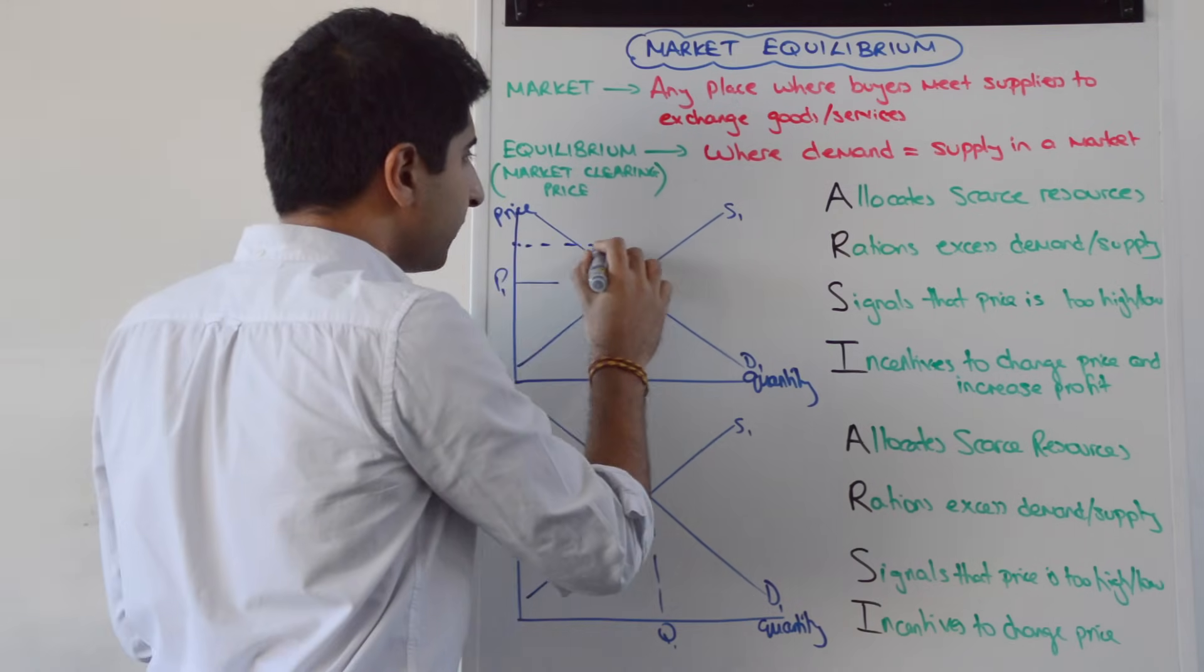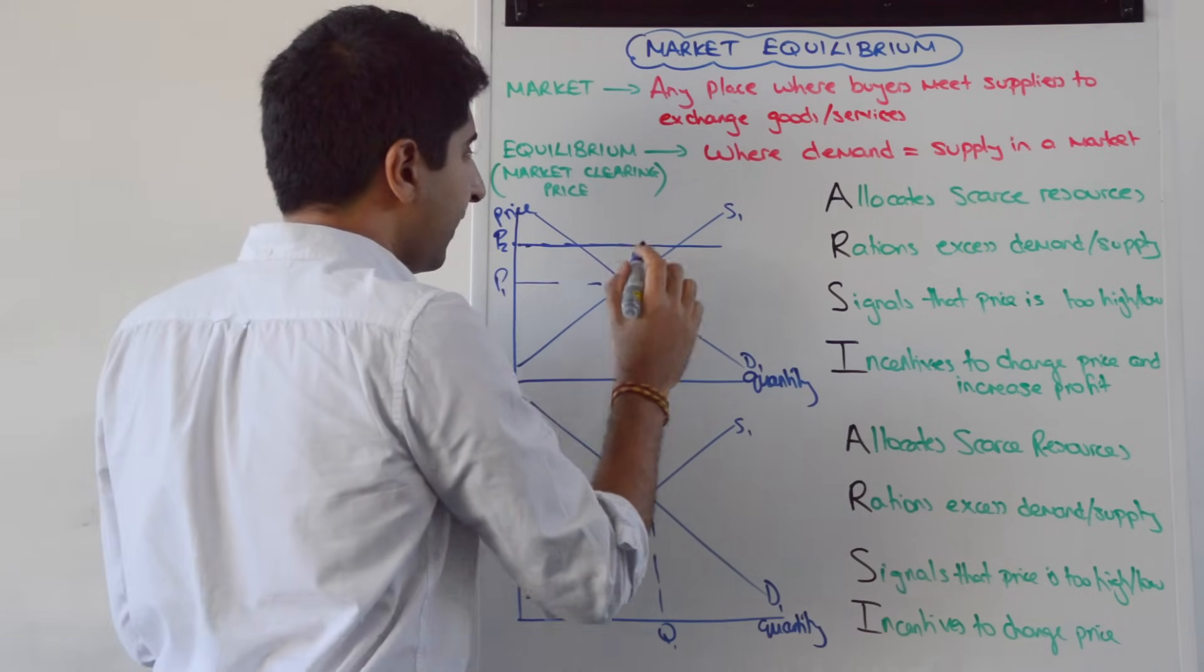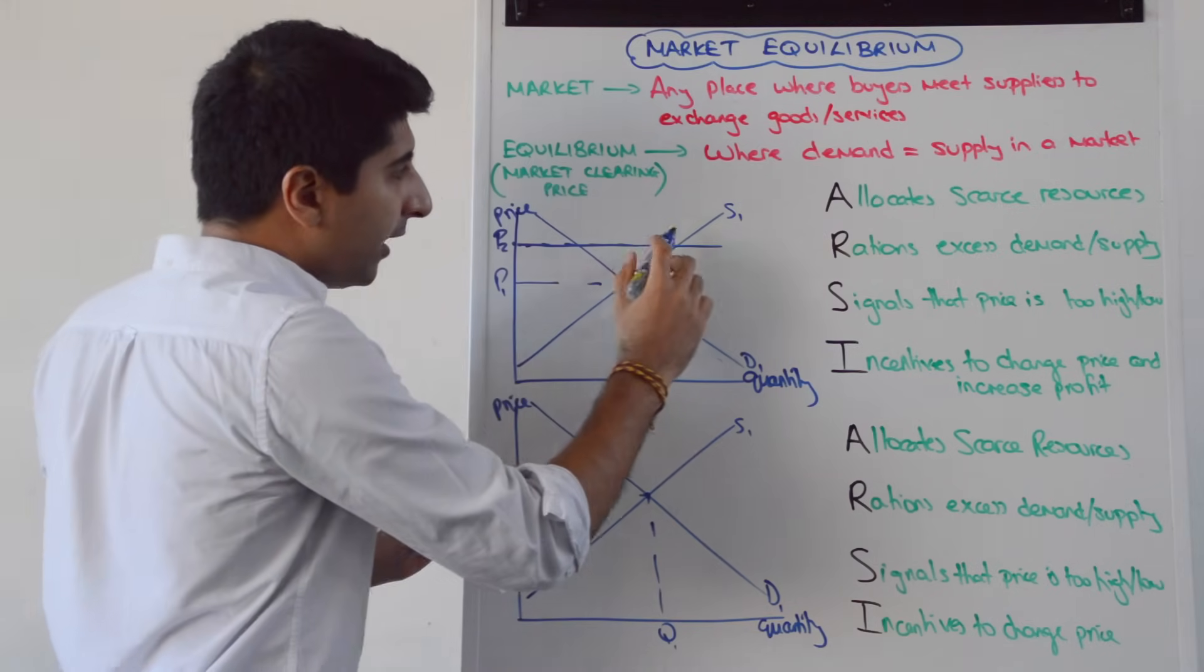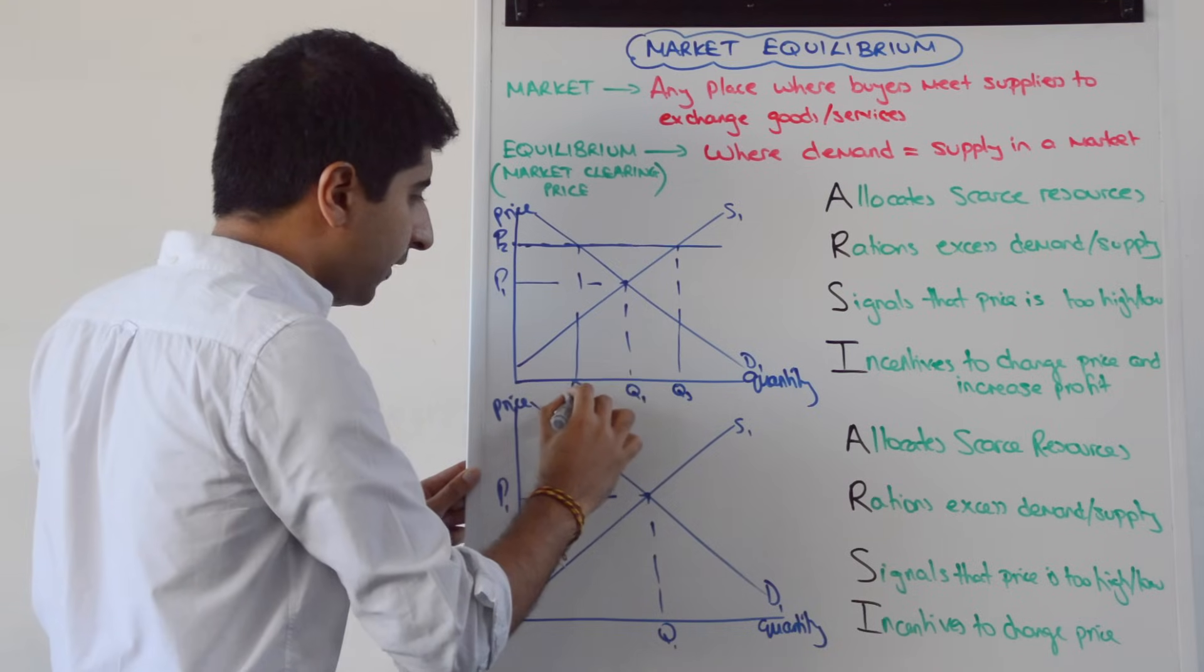If the price is above P1, we'll have something like this. So if the price is above P2, it's pretty clear that that's disequilibrium because demand and supply are not in balance. If we take that line across, we can see that supply is over there and demand is over there.